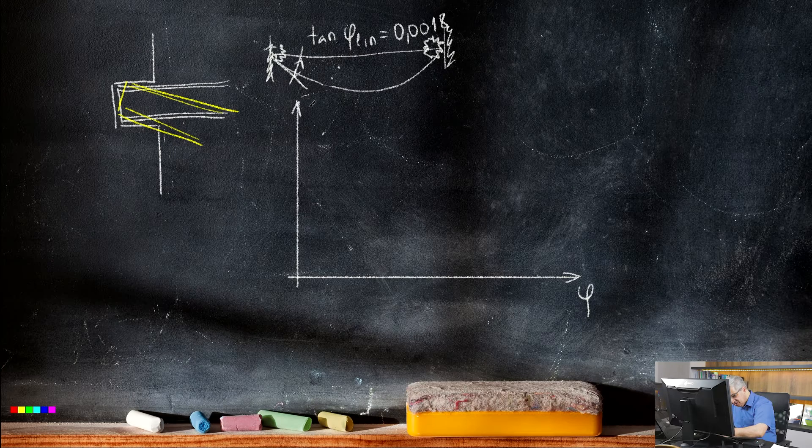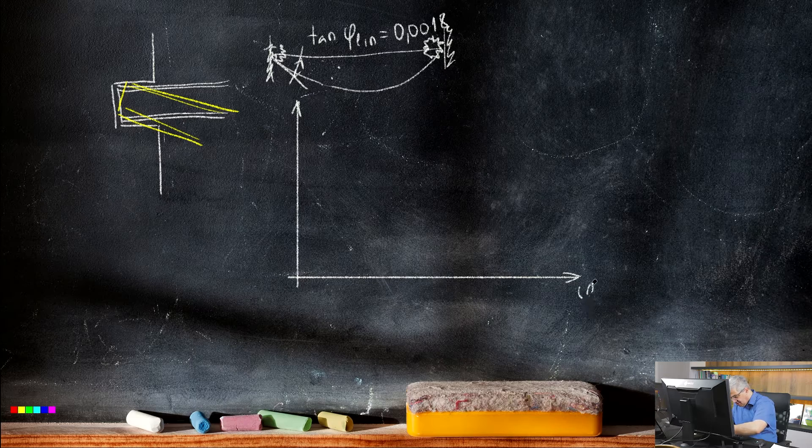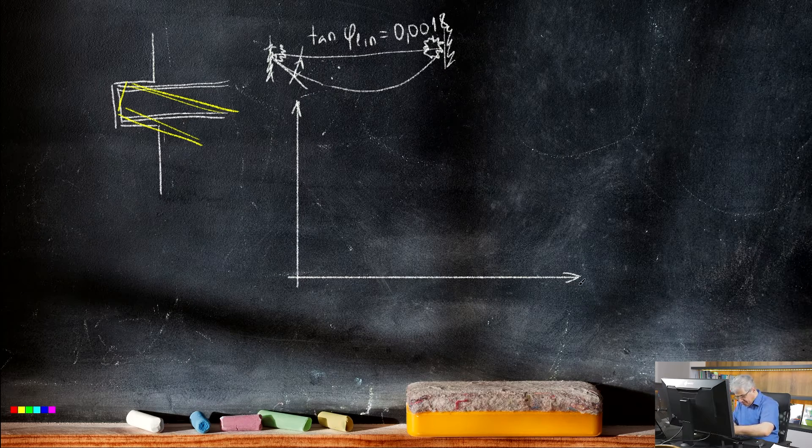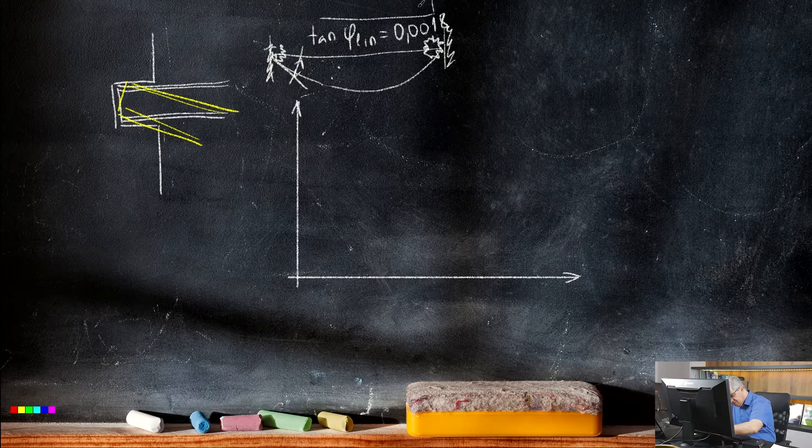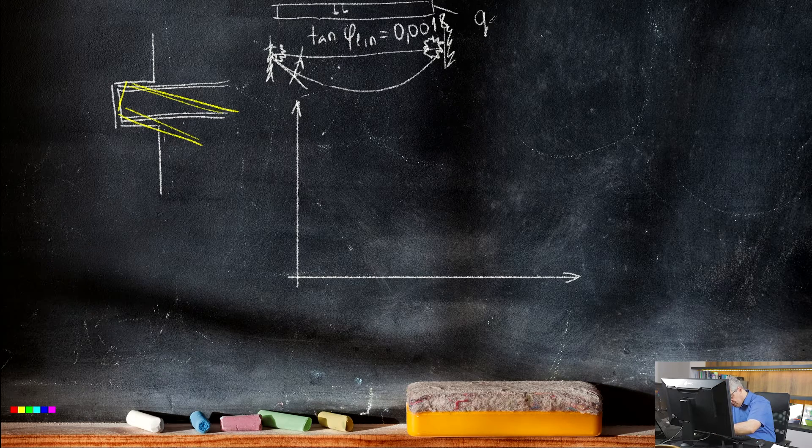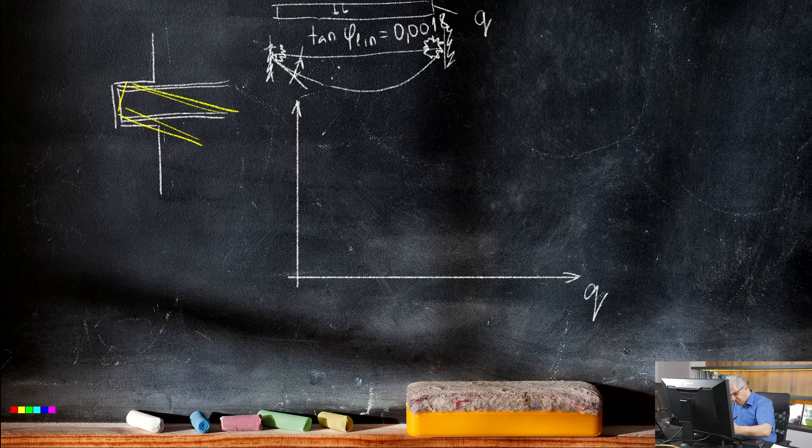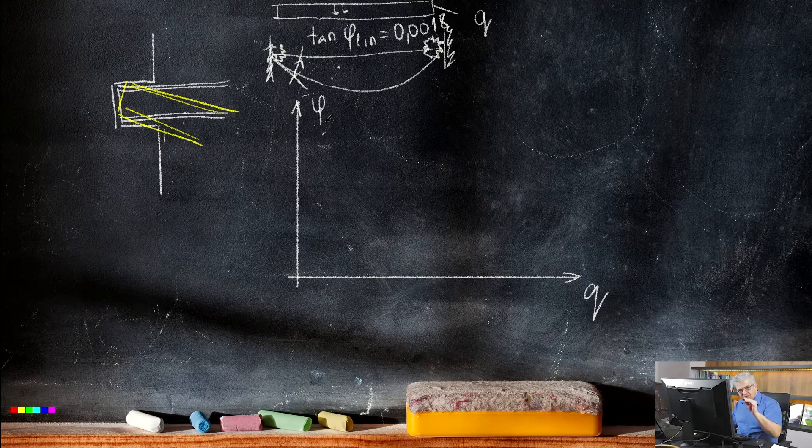So what happened? We have on the horizontal line the load. On this member we put some distributed load with the name q. And on the vertical line I have the rotation of the support.